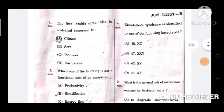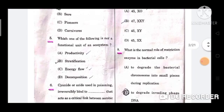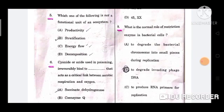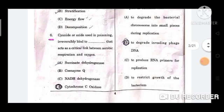Question number 7: The Klinefelter syndrome is identified by one of the following karyotypes. The correct option is option B, 47 chromosomes and condition is XXY. Question number 8: What is the normal role of restriction enzymes in bacterial cells? The correct answer is option B, to degrade invading phage DNA.